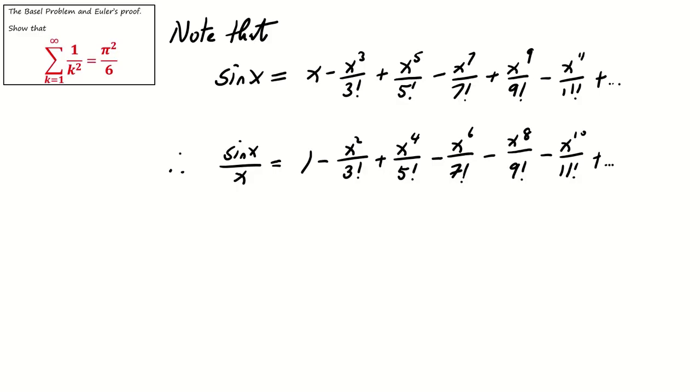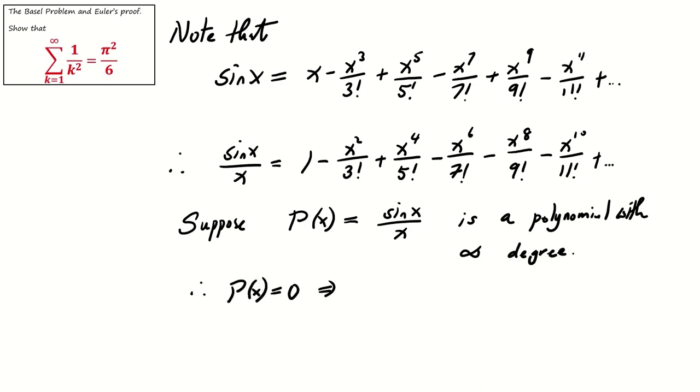From the left hand side it is sin x over x, and from the right hand side it is a series. We can treat this series as a polynomial of infinite degree. So now we suppose p(x) equals sin x over x, and it is a polynomial with infinite degree. Note that p(x) equals 0 implies that x equals k pi for any integer k.